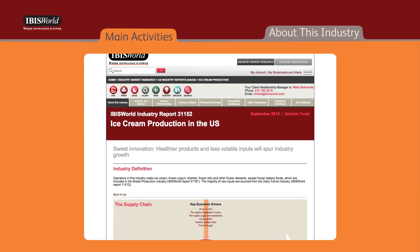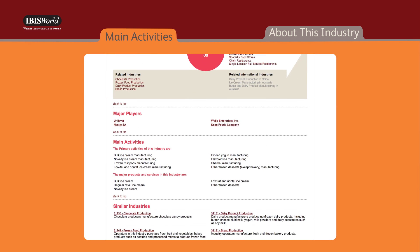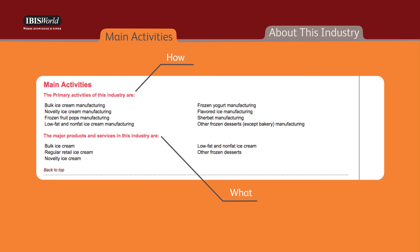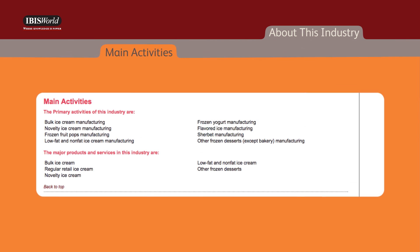The Main Activities section summarizes what the industry does, makes, or provides. It includes lists of primary activities and the major products or services of that industry.